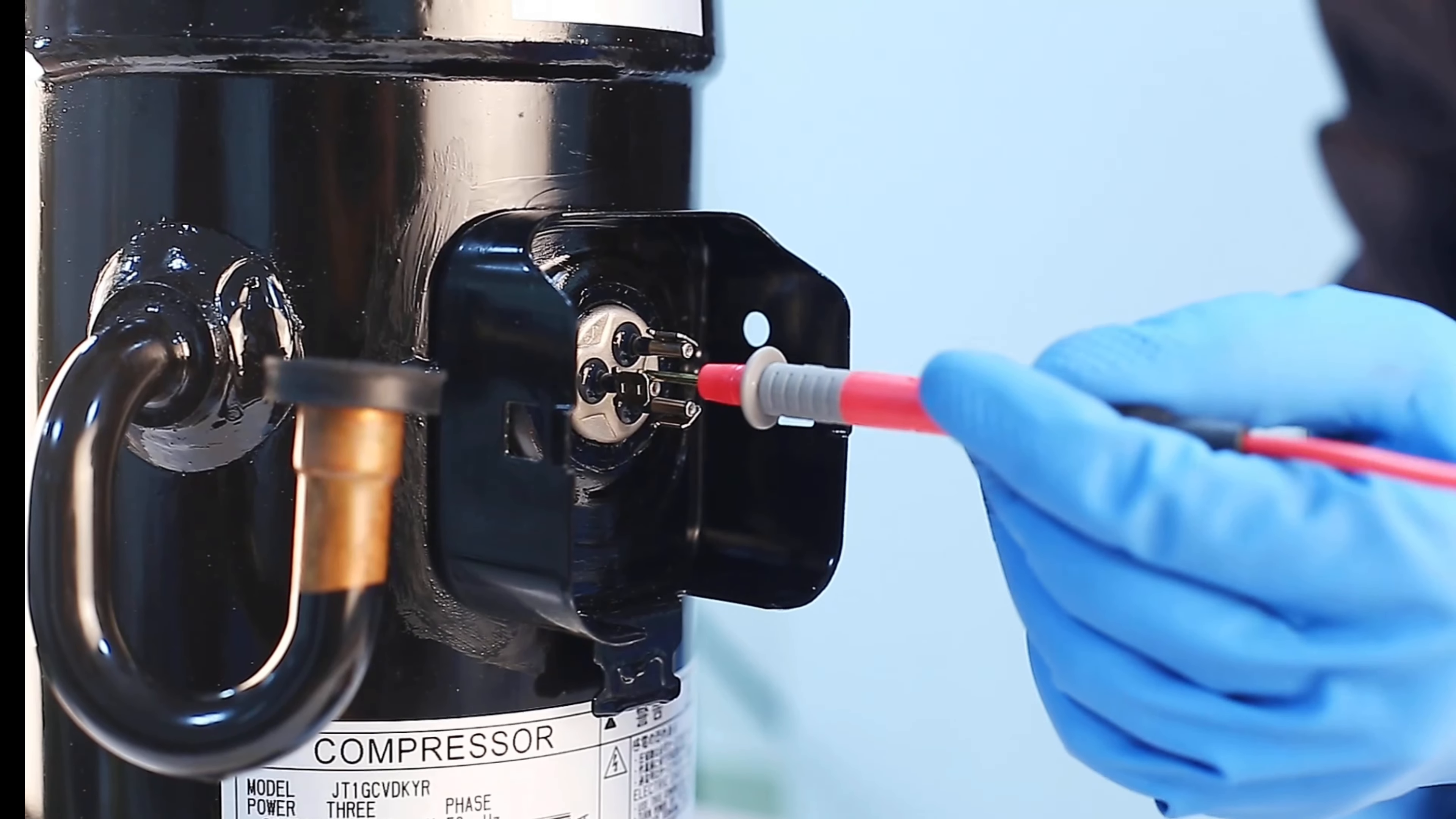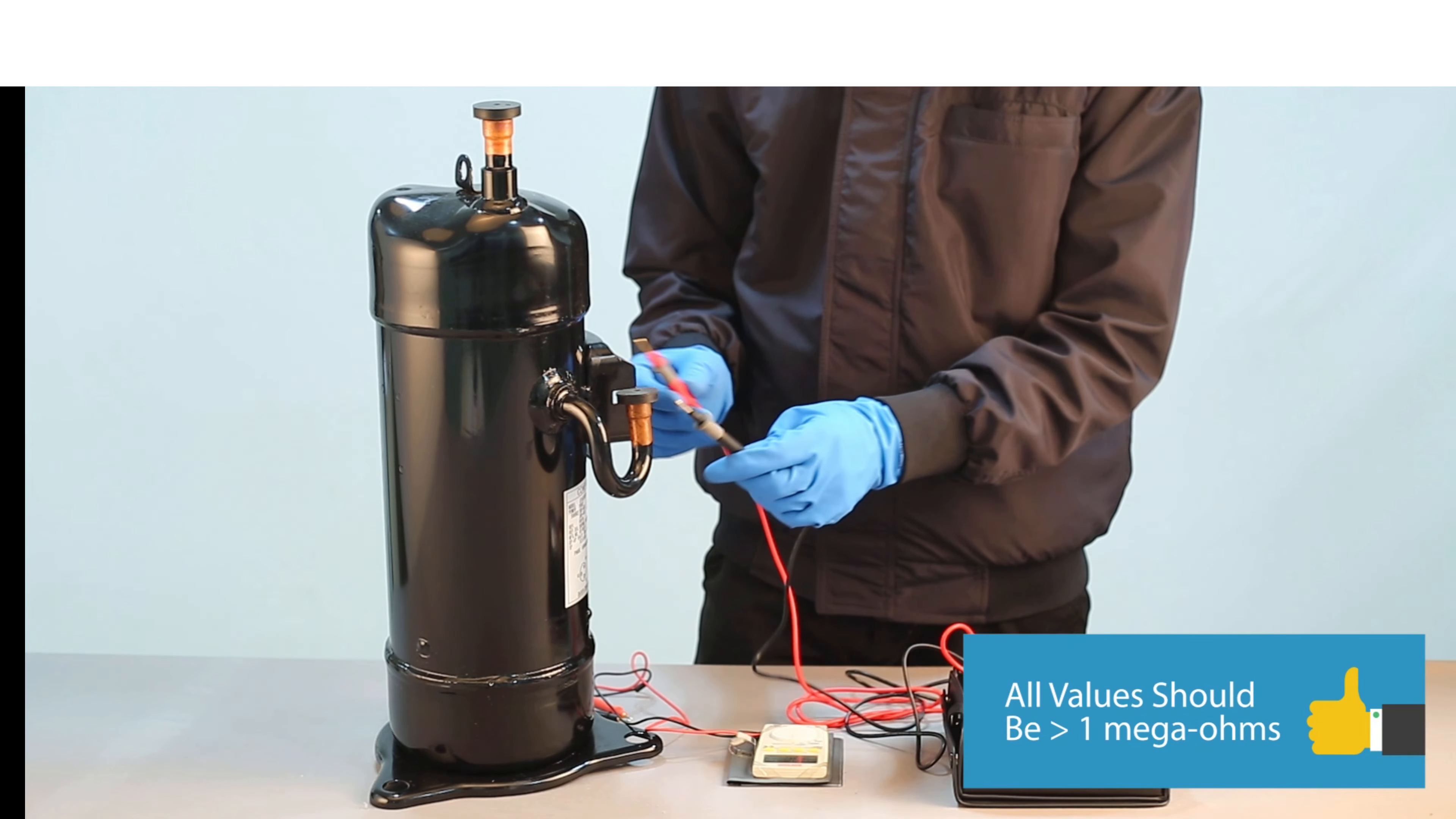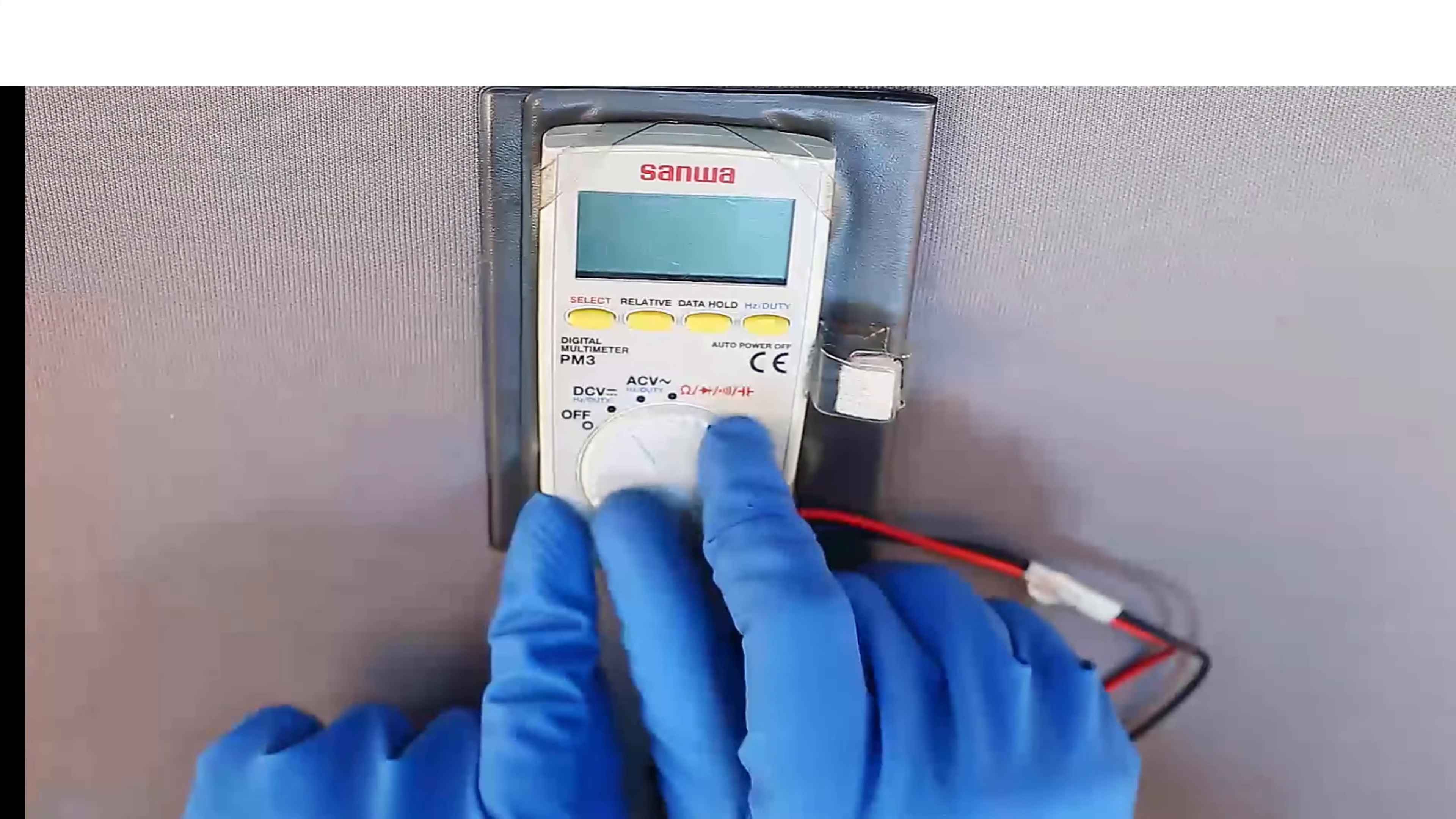Connect the red probe to U, V, and W one by one. All three values should be more than one mega ohm. If any value is less than one mega ohm, it means the compressor is defective.